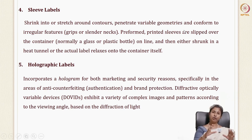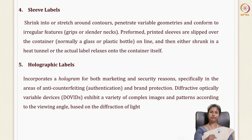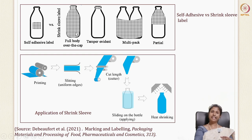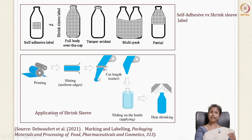Sleeve labels work like shrink labeling, where pre-formed, pre-printed sleeves are put onto containers and then shrunk using heat to get the shape of the product. In a self-adhesive label you glue it onto your glass or bottle, but in a sleeve label you put it onto your package and take it through a heat tunnel. It can cover the full package, be used only over caps for tamper-proofing, cover multi-packs, or be partial.